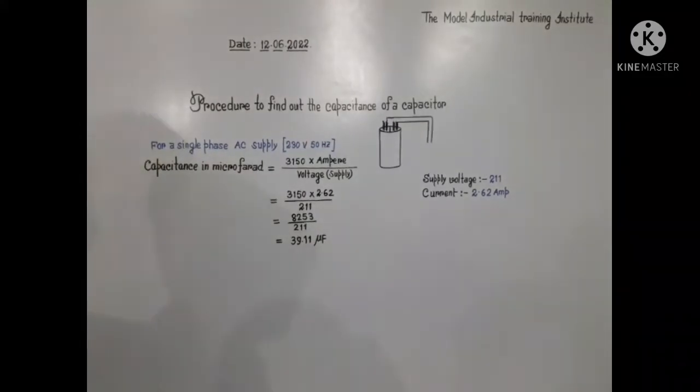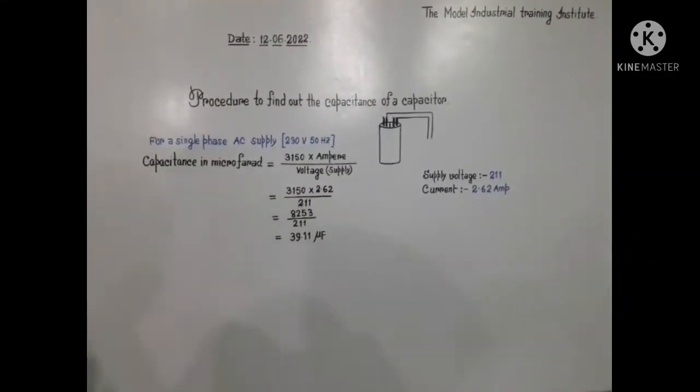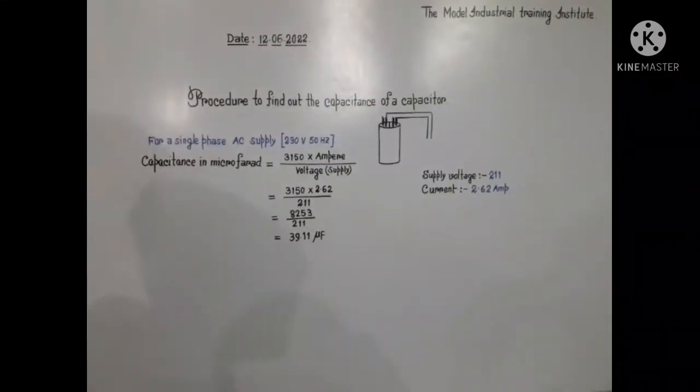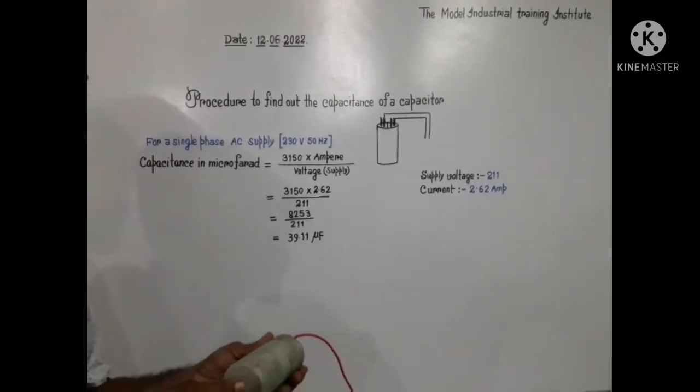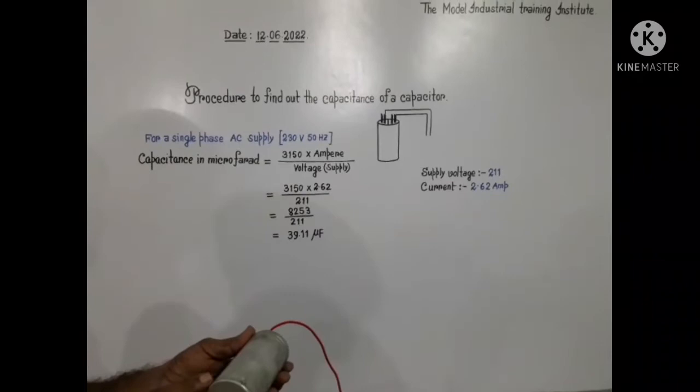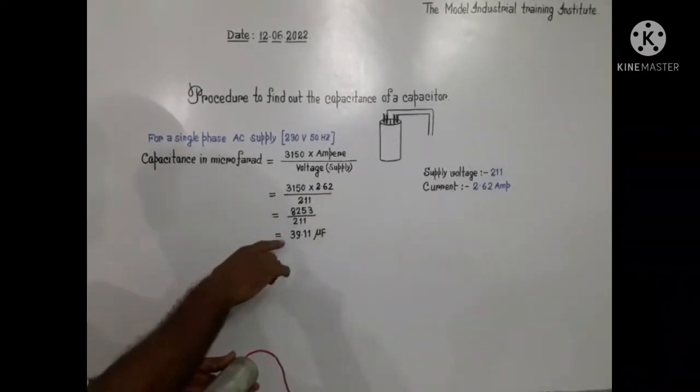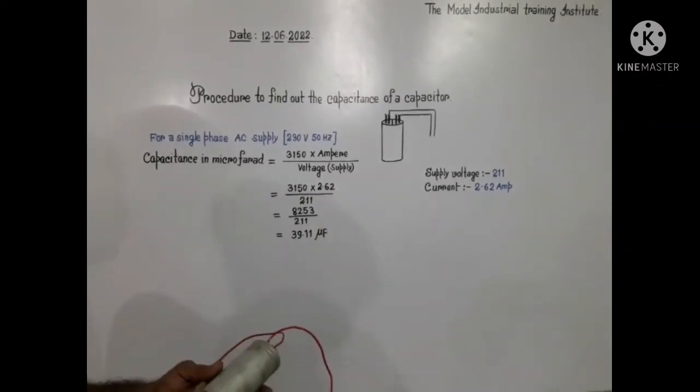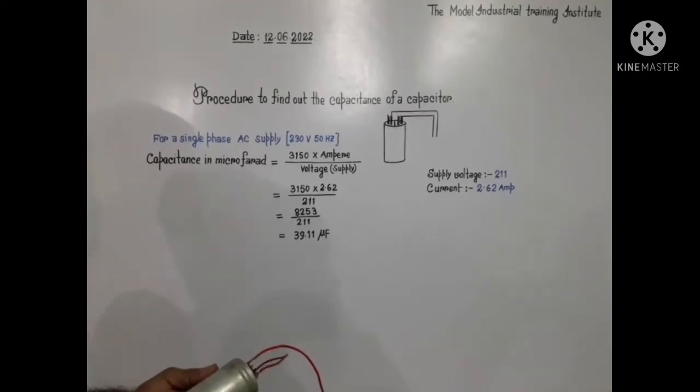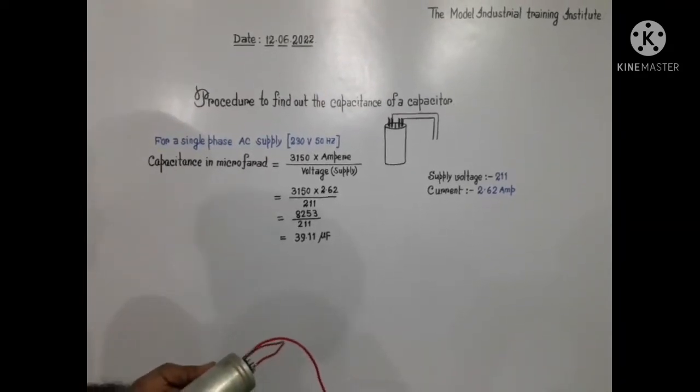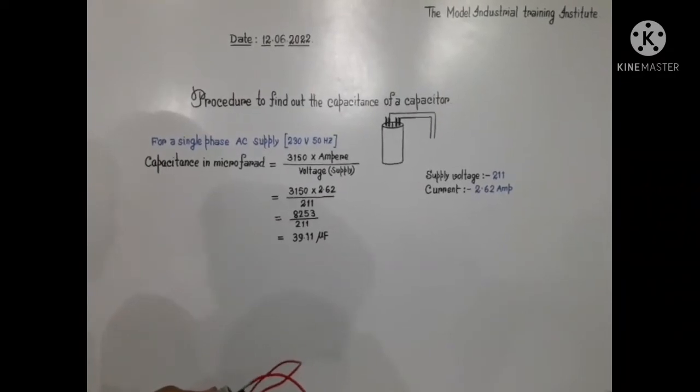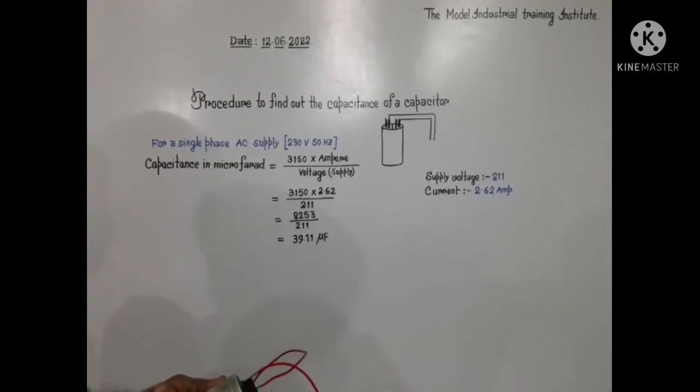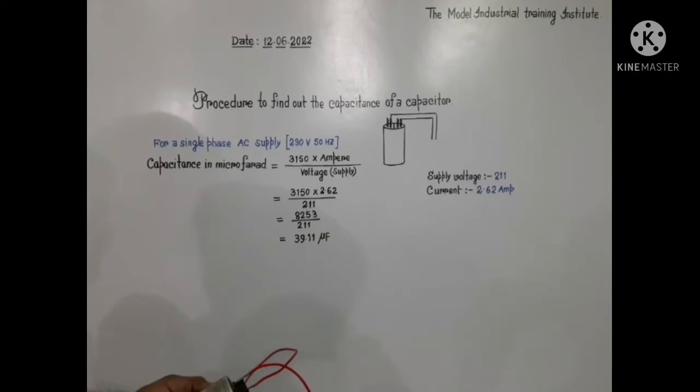39.11 microfarad. But in this capacitor initially microfarad was 50. Now it is near to 40. So 20% MFD or capacitance has been lost. So this capacitor is not fit for the respective system, so capacitor has to be replaced.